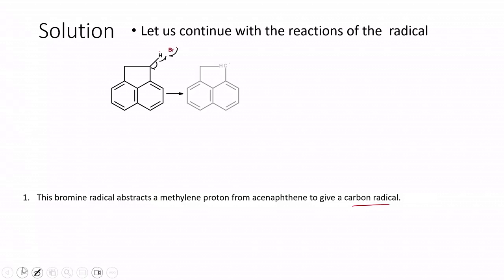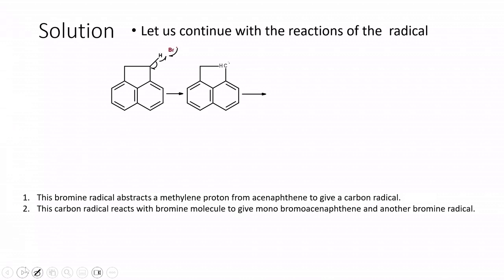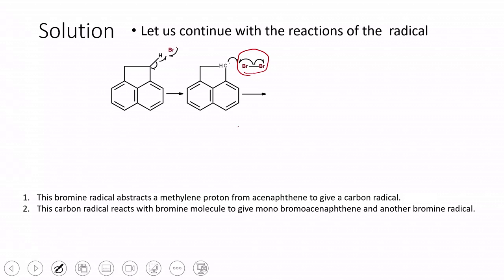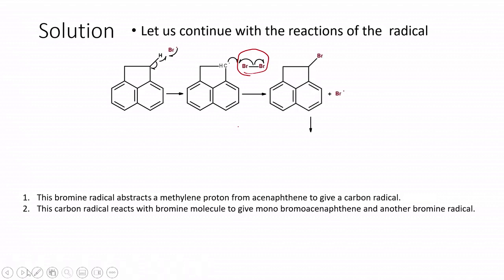The bromine radical abstracts one of the benzylic hydrogen atoms. There is a homolytic cleavage of this particular bond, and cleavage of the benzylic C–H bond leads to carbon radical formation. The acenaphthylene first loses a hydrogen radical to give the carbon radical. This carbon radical then reacts with the bromine radical, breaking the bromine molecule under photolytic conditions to give the corresponding bromo derivative.